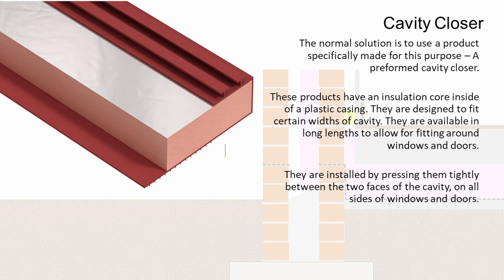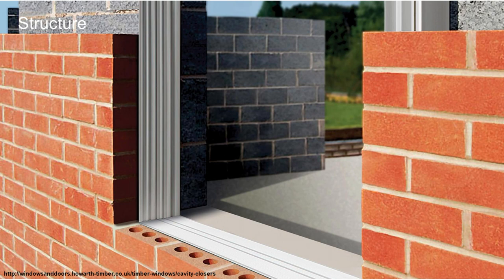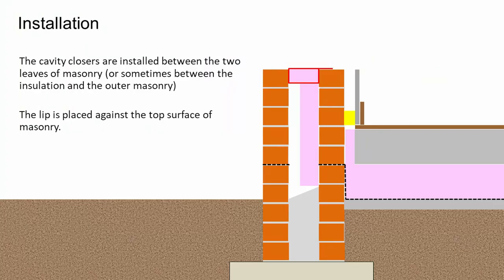These products have an insulation core and around that is a plastic casing, and they're designed to fit certain widths of a cavity. You can get them in various lengths so that we can create cavity barriers around most sizes of windows and doors. We install them by pressing them tightly into the cavity between the two faces of masonry, all the way around the window — top, side, and bottom — to make sure that we close the entire cavity. Cavity closers are installed between the two leaves of masonry, or sometimes between the insulation and the outer masonry.